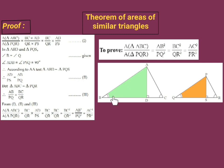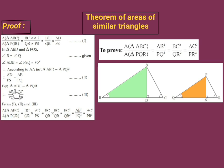We also know triangle ABC is similar to triangle PQR, which is given. Here, the corresponding sides of these two triangles are also in proportion. Taking the two ratios we want: AB upon PQ equals BC upon QR. This is statement number 3.